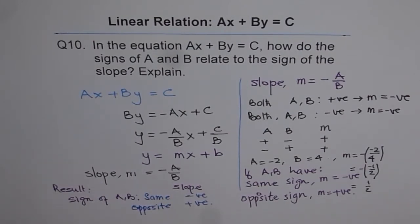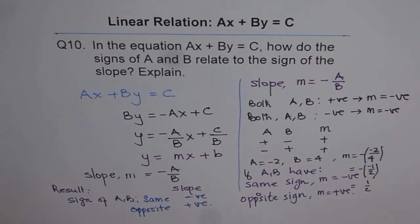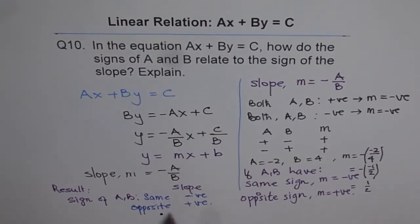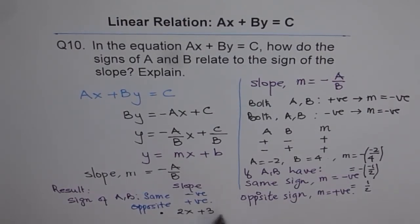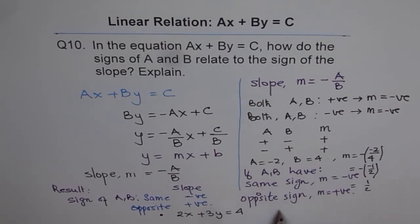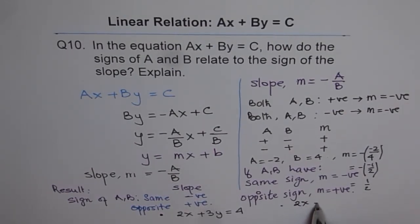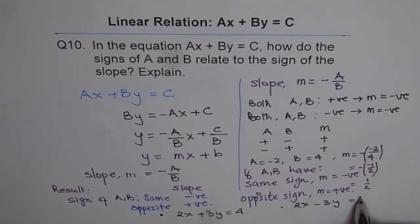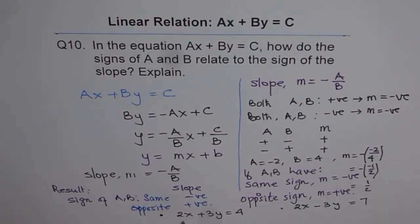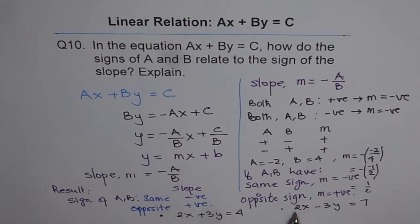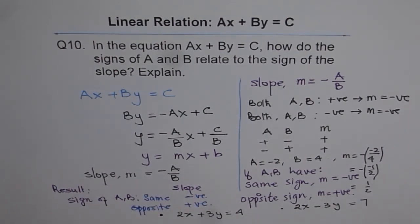That is what we can conclude from this particular equation. As an exercise, try to write down the slope, whether it is positive or negative, for the given equations. Let me give you equation number 1 as 2x plus 3y equals to 4. And equation number 2 as 2x minus 3y equals to 7. Here you see, we have same signs for A and B, both are positive. Here, one is positive and one is negative. Figure out and find out how the sign of slope relates to the sign of A and B. You will understand it better. Thank you.